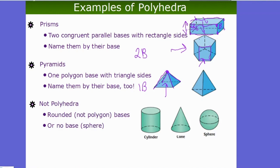Cylinders and cones are not polyhedra because polyhedra by definition have polygons for sides. A cylinder is kind of like a round prism — a circular prism — and a cone is kind of like a round pyramid with a circle base meeting at a point. The sphere is like a basketball and will be covered in a later video. This video will cover prisms, pyramids, cylinders, and cones.